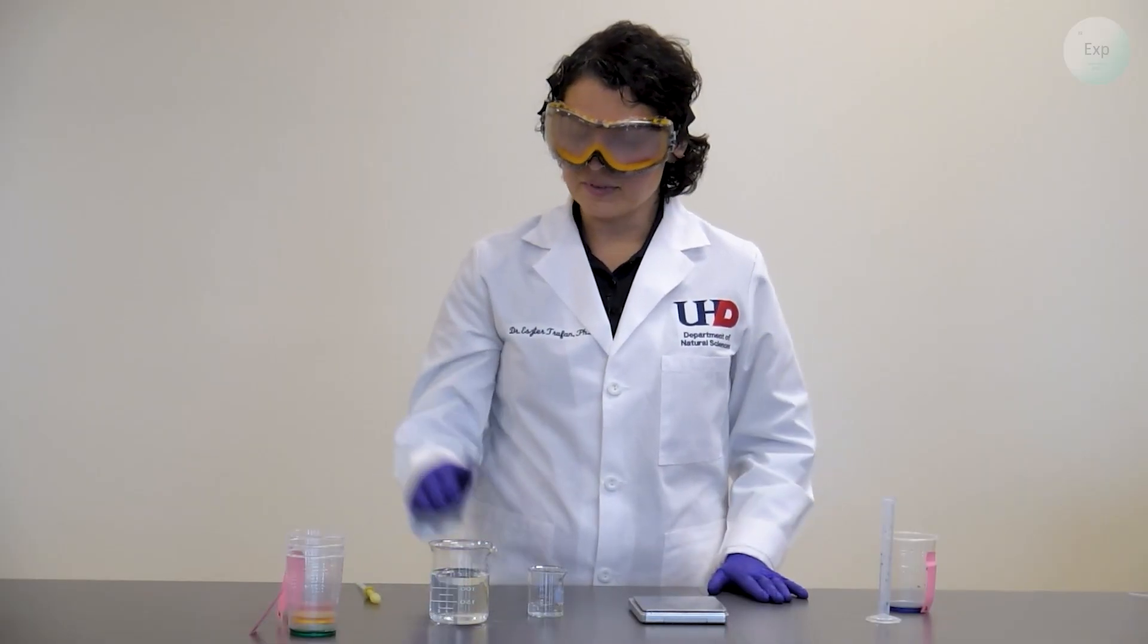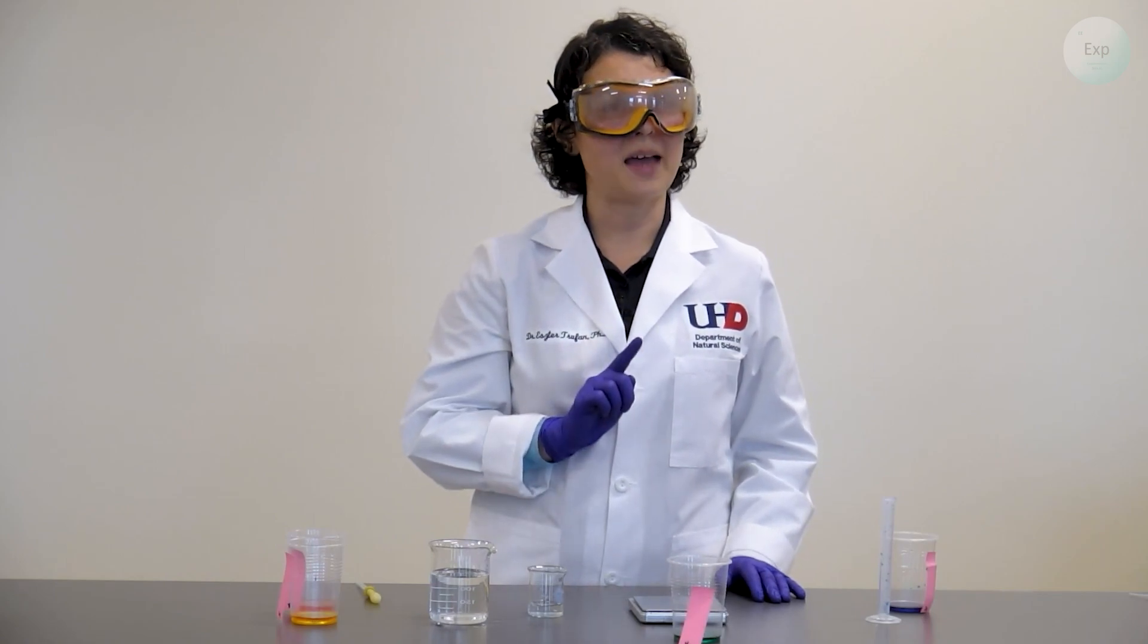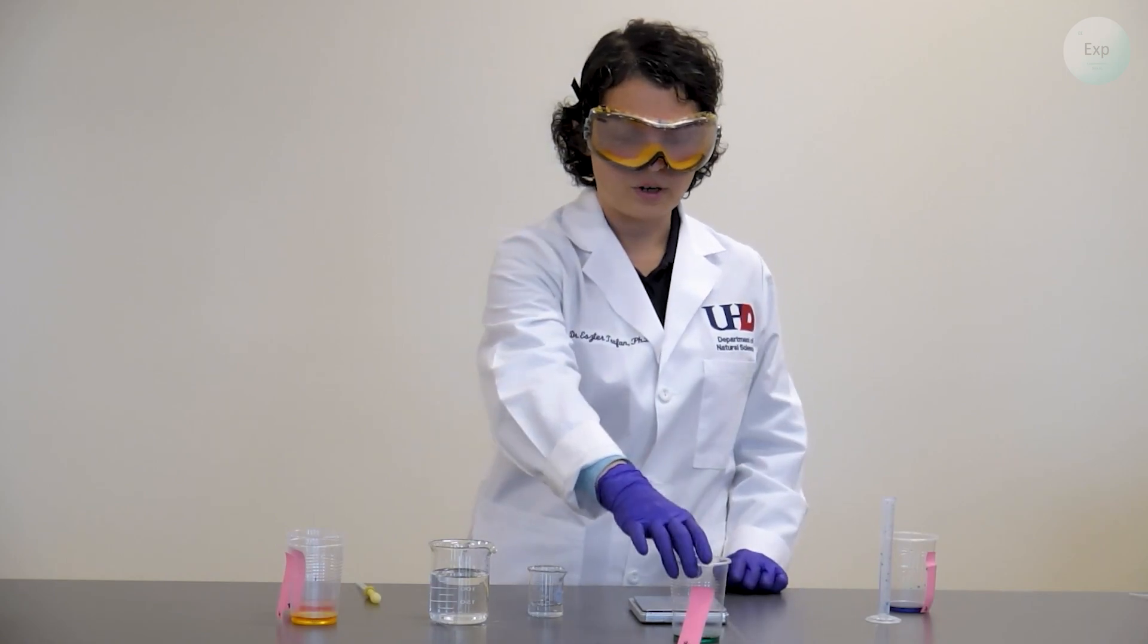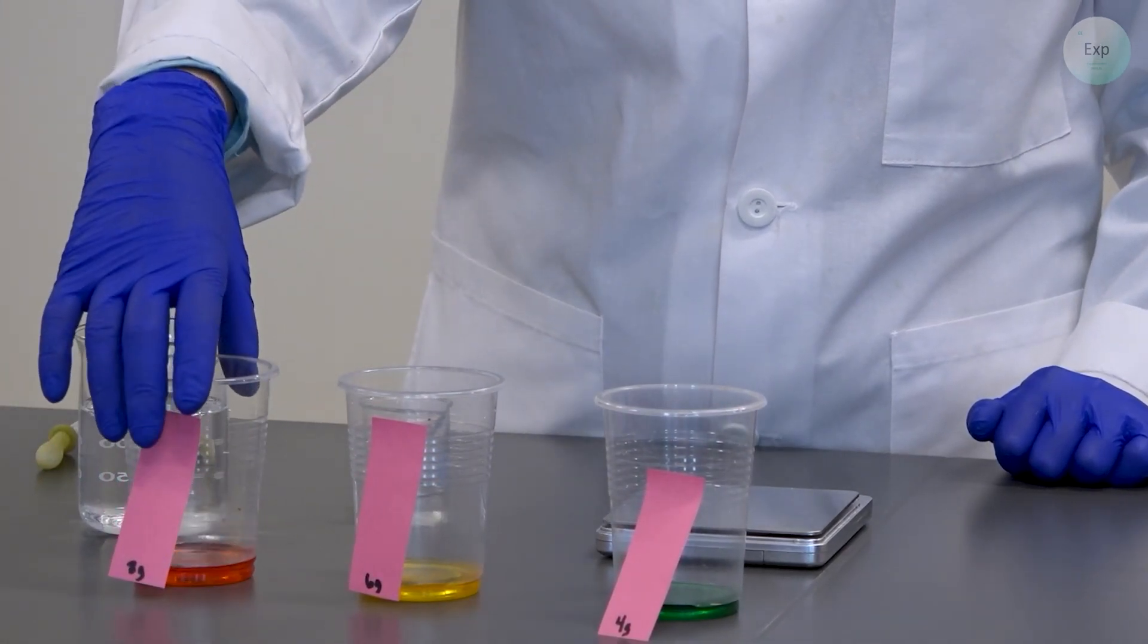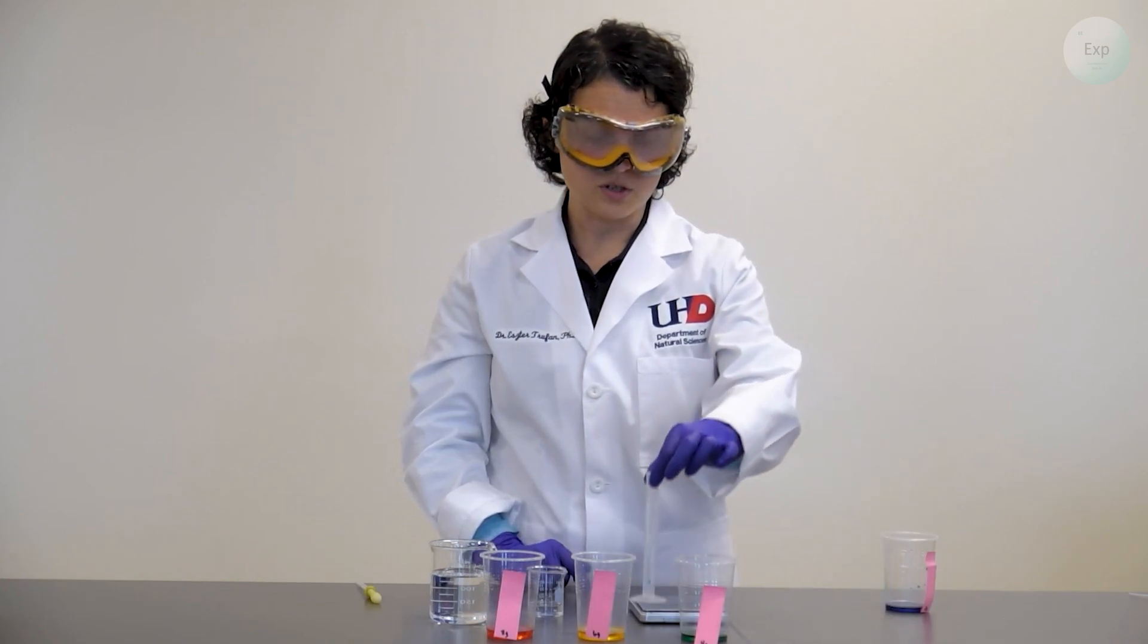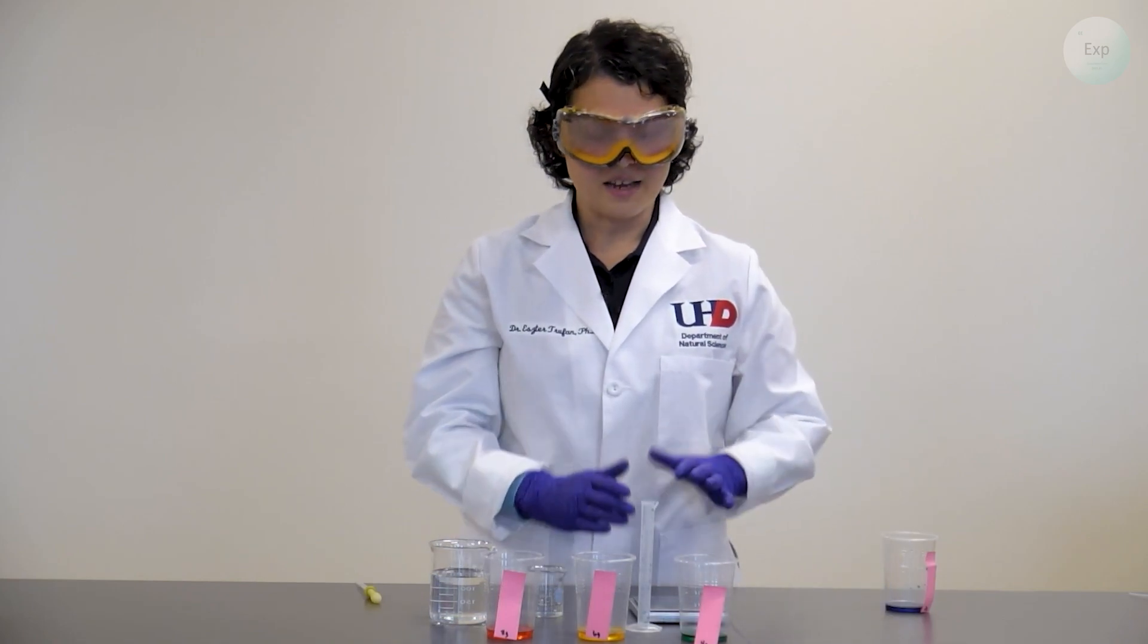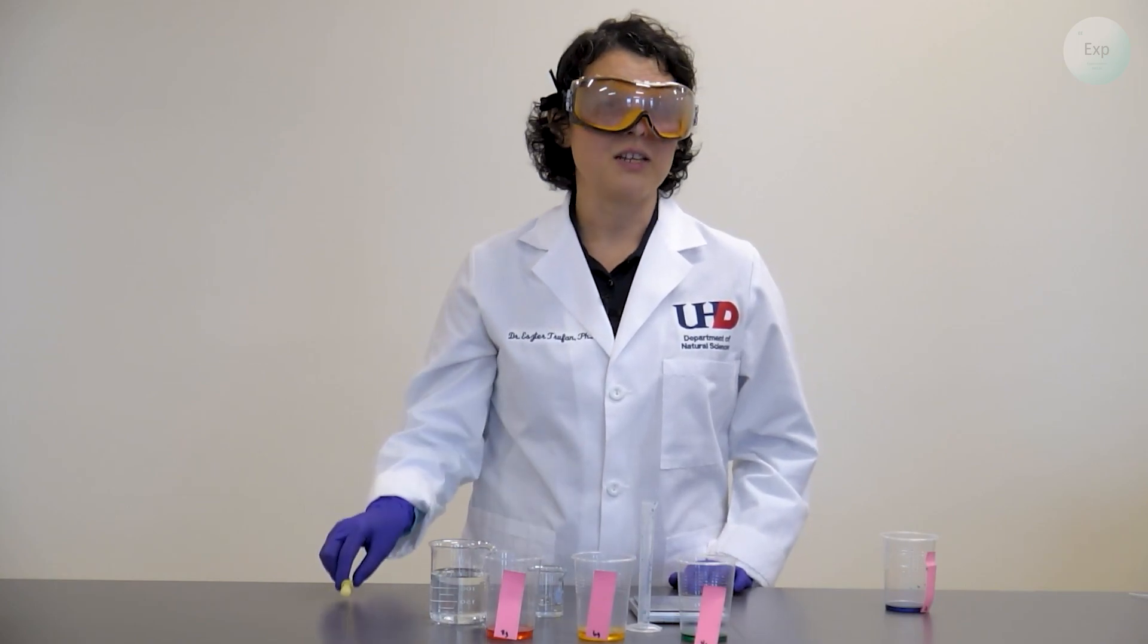For the next part, you will do the same type of three recorded measurements for mass and volume for your green solution, your yellow solution and the red one. Keeping in mind that in between measurements, in between solutions, you will need to rinse and completely dry your graduated cylinder and thoroughly rinse your pipette.